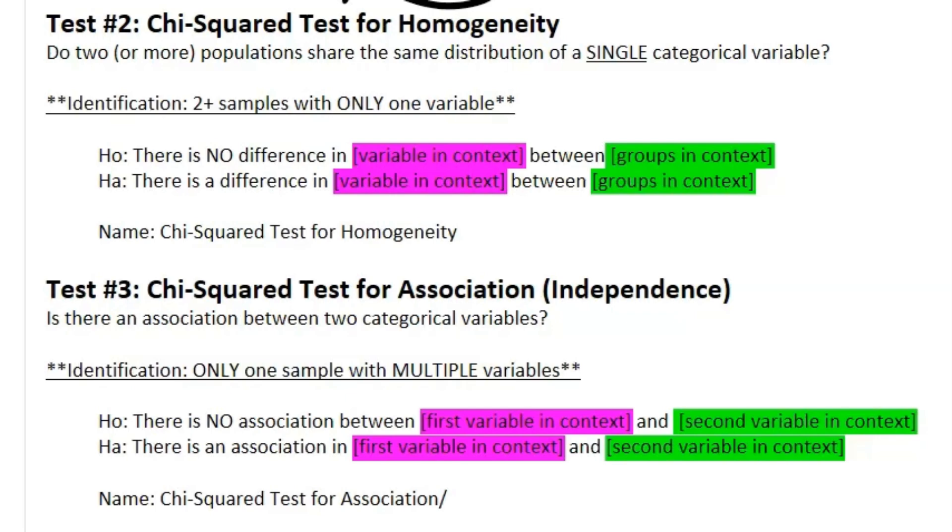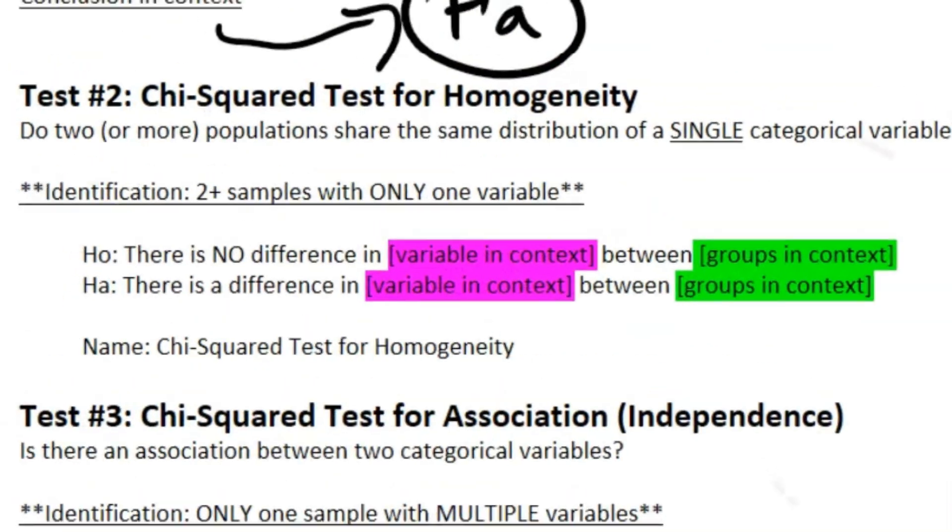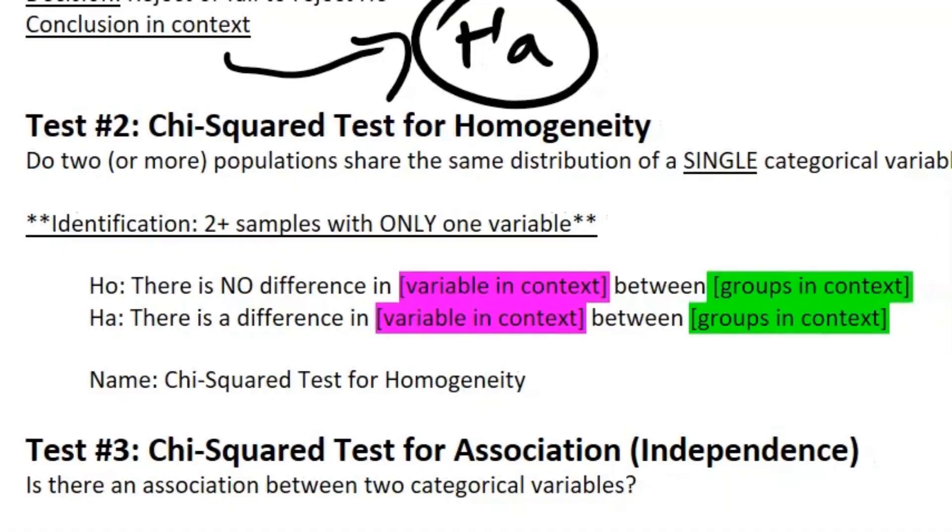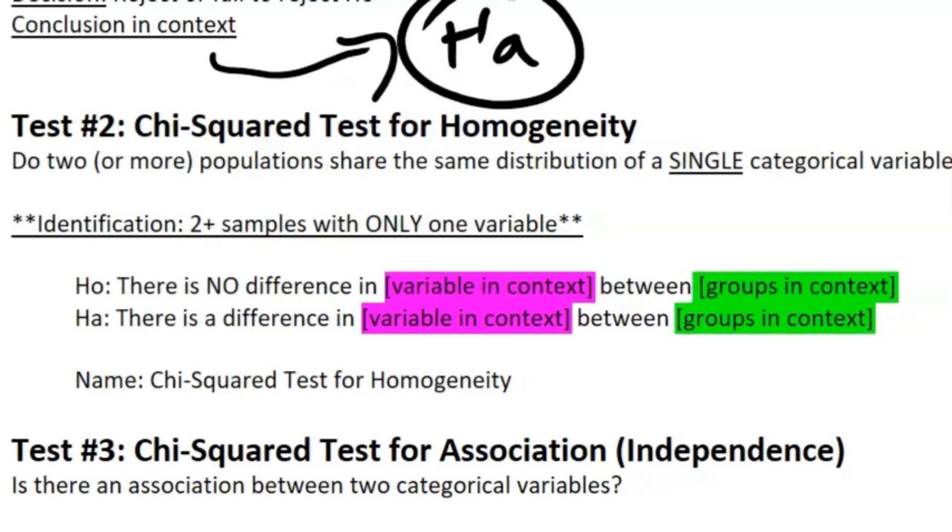You'll notice that this is pretty short, and that's because between these two there's only like two differences: how you identify them, the name, and your null hypothesis and stuff.